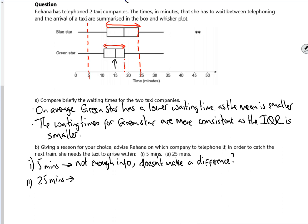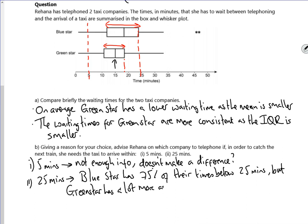So we've got to try and put that in. So let's go with, so 25 minutes. So Blue Star has 75% of their times below 25 minutes. So Green Star has 75% of their times below 18 minutes.